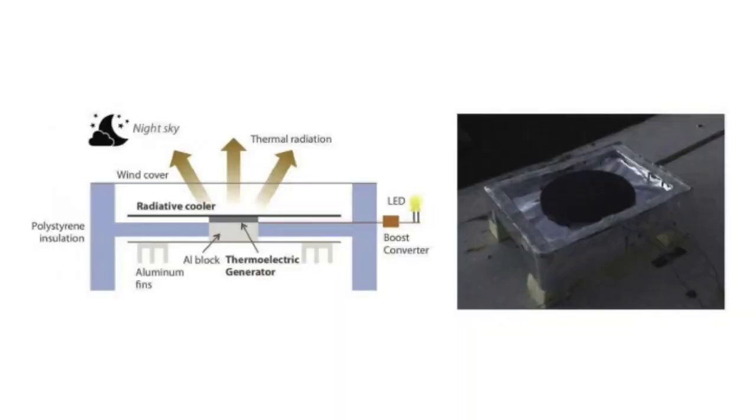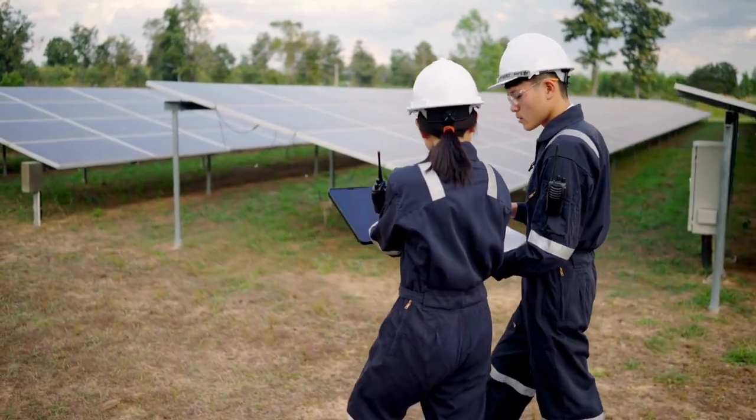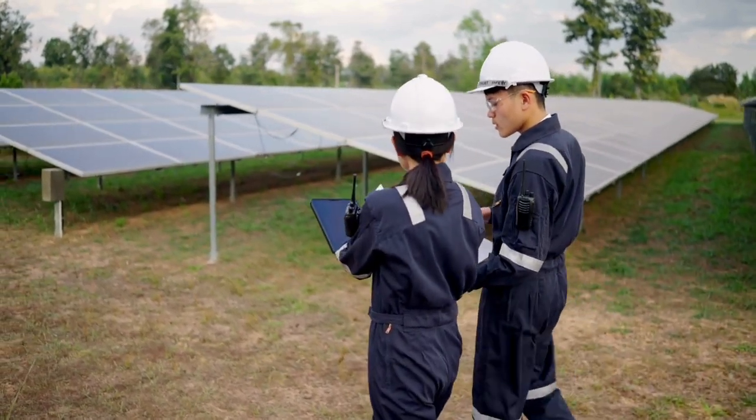When a photonic structure is placed beneath a solar panel, it can radiatively cool without influencing the solar absorption. The results indicated that, as a result of radiative cooling, the cell temperature dropped to 13 degrees.